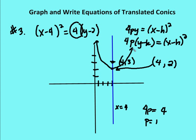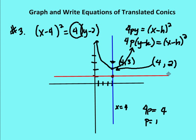Now I graph the parabola. With the axis of symmetry, knowing it faces up, and having the vertex and focus, I can graph it. Next I identify the directrix, which is p units along the axis of symmetry away from the parabola — one unit down from the vertex. The directrix runs perpendicular to the axis of symmetry. By definition, the distance from the focus and from the directrix to any point on the parabola are equidistant. The equation for the directrix is y equals 1.